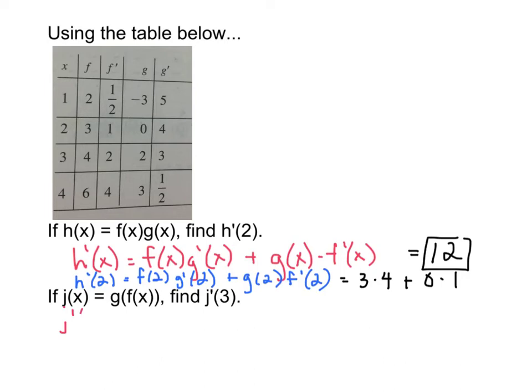j prime of x will be derivative of the outside, leave the inside alone, then multiply by the derivative of the inside.